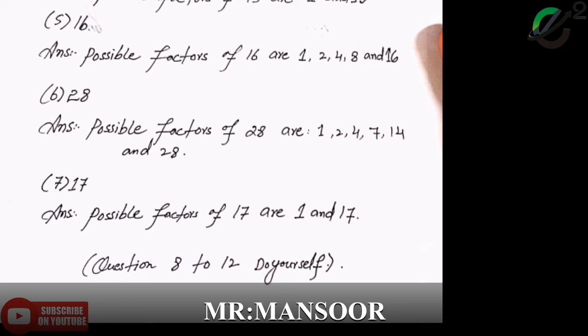Question number 6 is 28. We need to find the possible factors of 28. Answer: possible factors of 28 are 1, 2, 4, 7, 14 and 28.